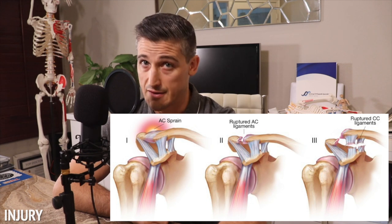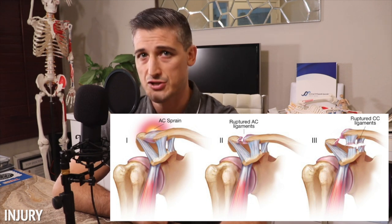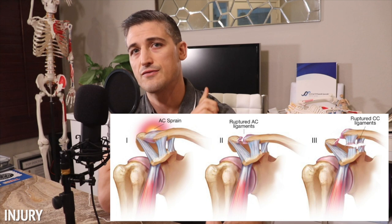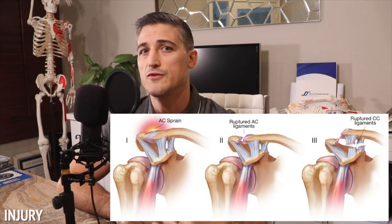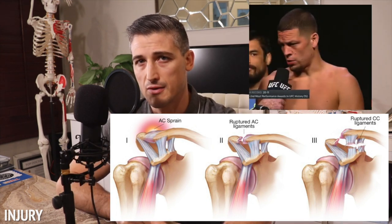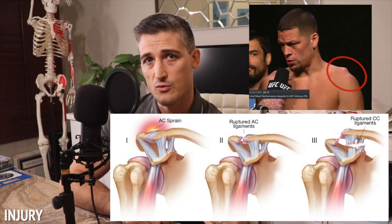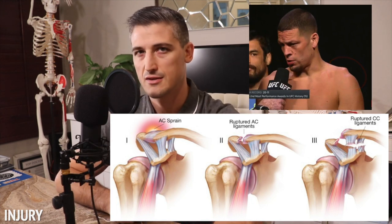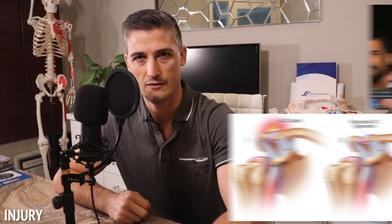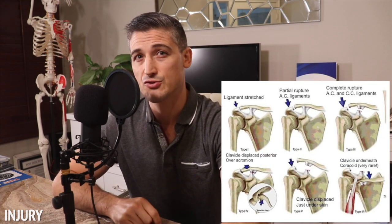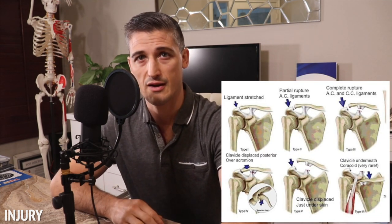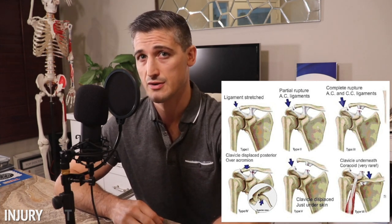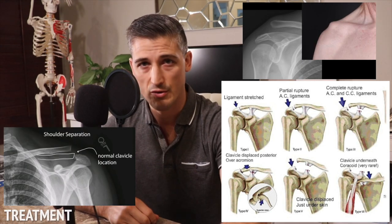The AC ligaments will fail first, followed by the CC ligaments, then the deltoid and trapezial fascia will fail as the clavicle translates further upward. With disruption of the shoulder suspensory complex, the arm goes downward and the clavicle springs upward, giving a very distinct look to the shoulder. The distance the clavicle travels upward on x-ray helps orthopedic surgeons determine which tissues are injured.